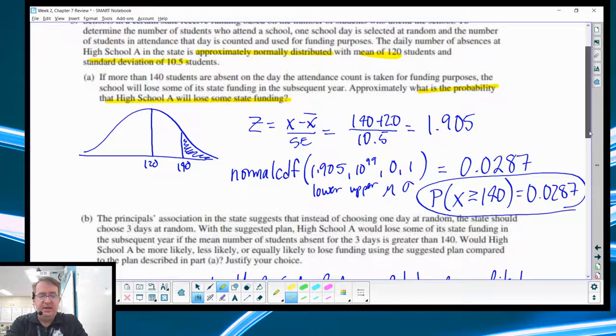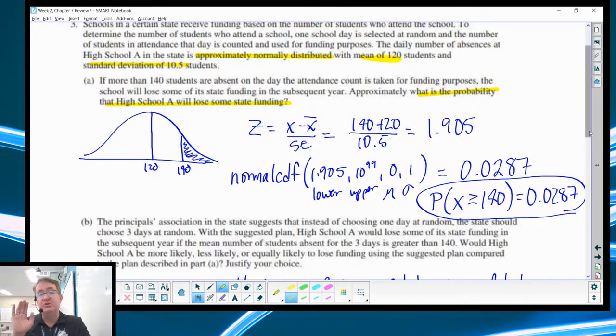Now the important thing here is that you always answer the question that's being asked. So here, it's what's the probability of high school A will lose some of its funding? You need to at least tie it into this. You can't just leave it as 0.0287. Some sort of summary statement, the probability that X, which is the number of school days, is bigger than or equal to 140, is going to be 0.0287. You could also write it out in a sentence if you wanted to. That would be fine. But that would be adequate for what you have.